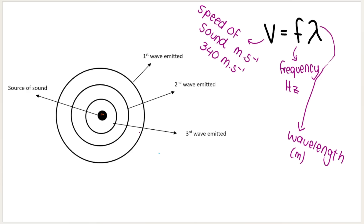Wavelength represents the distance between the different wave crests. So for example, this distance over here would be the wavelength — let's call it x — and this distance over here would also be the wavelength x, and so on.